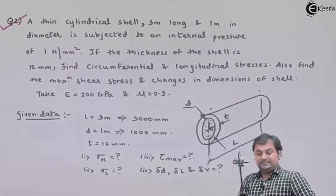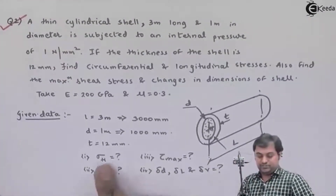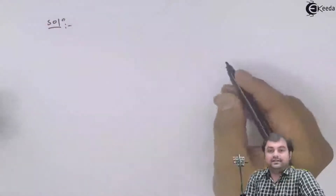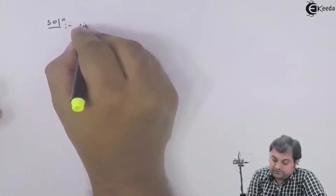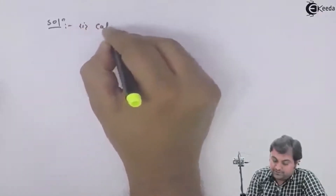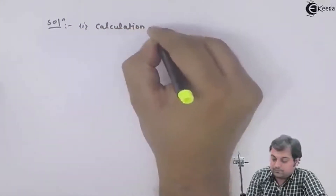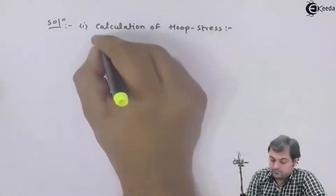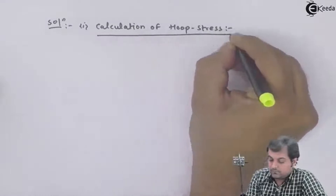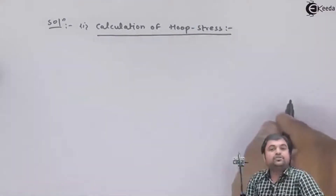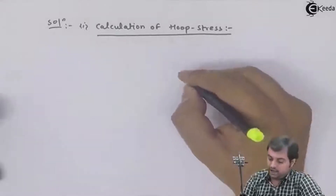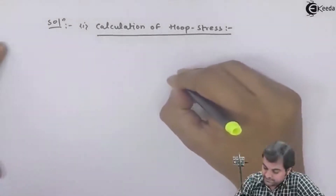Now let us solve this problem. The first question is hoop stress. I will draw the diagram and explain how the hoop stress develops. The pressurized fluid tries to break open the cylinder into two halves along its diameter, and the stress developed because of this is called hoop stress.